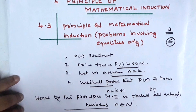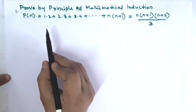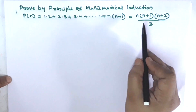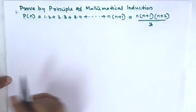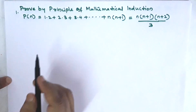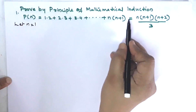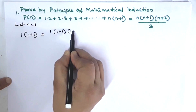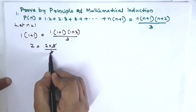First question: prove by the Principle of Mathematical Induction that P(n) = 1·2 + 2·3 + 3·4 + ... + n(n+1) = n(n+1)(n+2) / 3. For n equal to 1: the left side is 1·2 = 2, and the right side is 1·2·3 / 3 = 2.